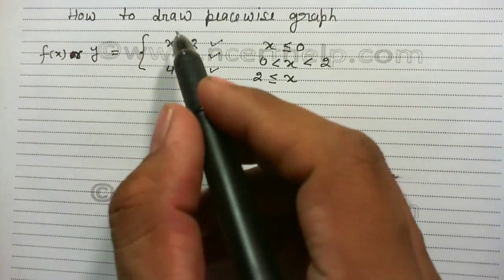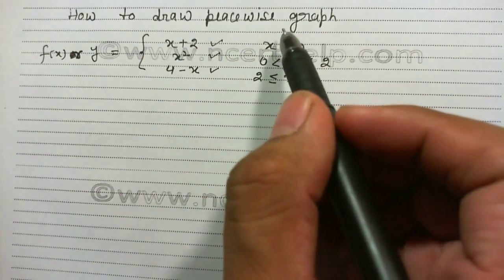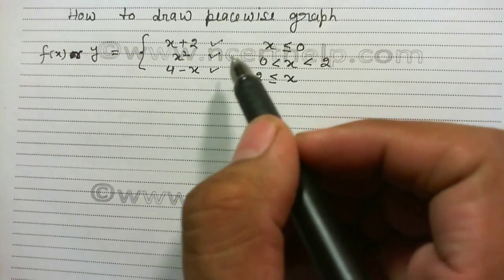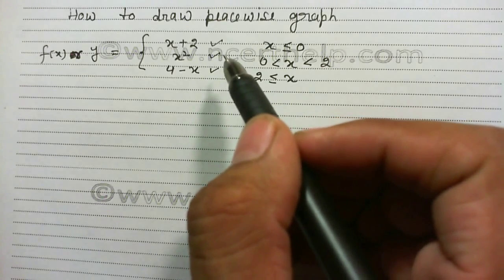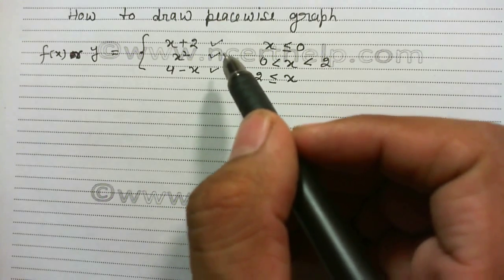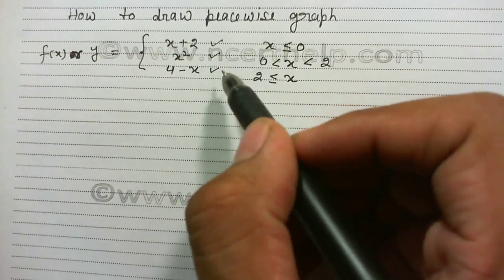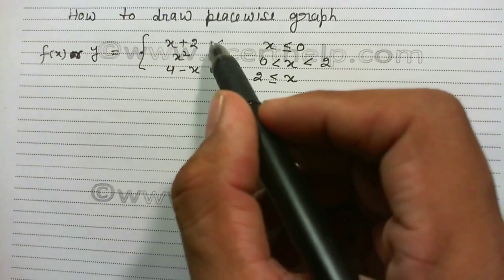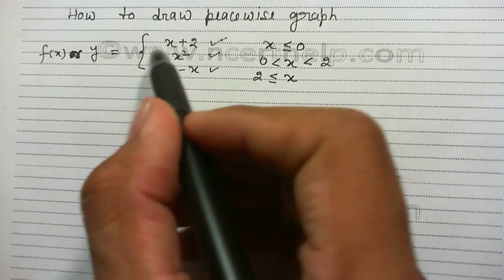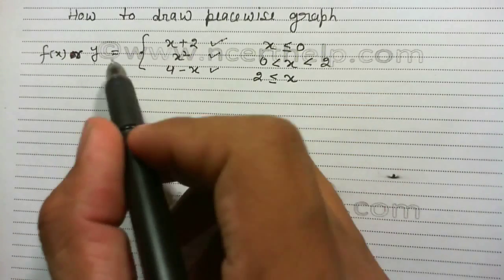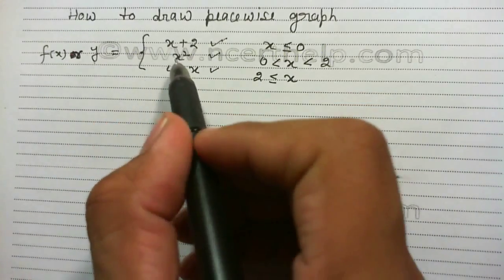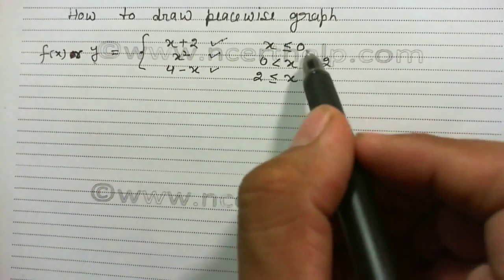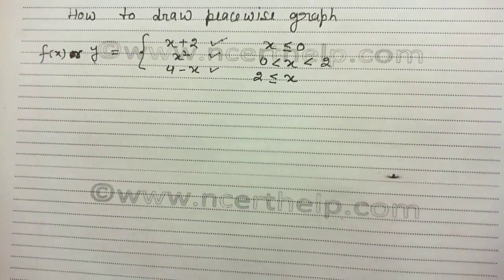First of all, what is a piecewise function? A function which is defined in many pieces is known as a piecewise function. This given piecewise function is defined in three pieces: the first one is y equals x plus 2, the second one is y equals x squared, and the third one is y equals 4 minus x, each in their given intervals.